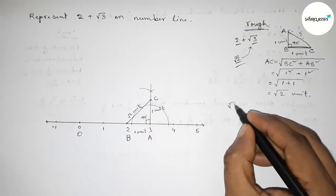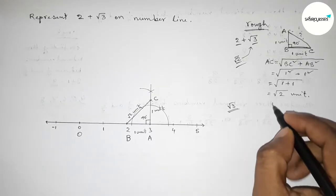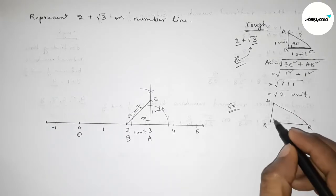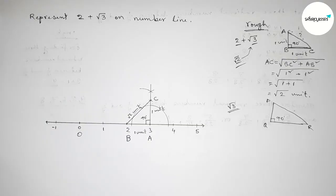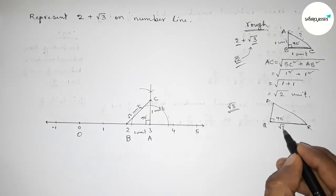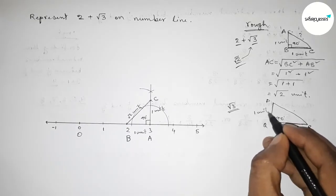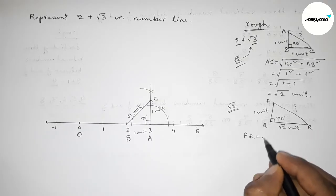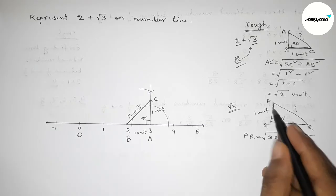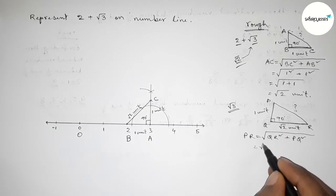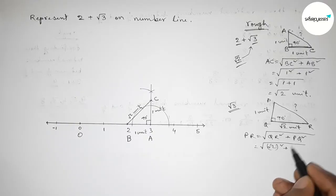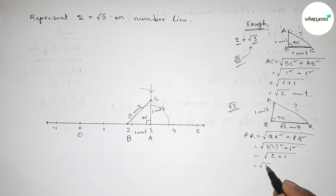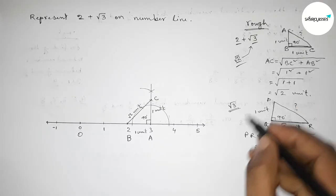Next, representing root 3. Roughly discussing root 3: drawing a right triangle PQR with a 90 degree angle. If the base QR equals root 2 units and the perpendicular PQ equals 1 unit, then by Pythagoras' theorem, hypotenuse PR equals root over QR squared plus PQ squared, which is root of (root 2) squared plus 1 squared, giving root of 2 plus 1, which is root 3 units.